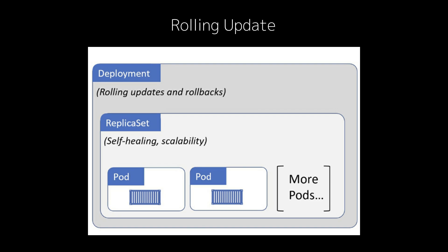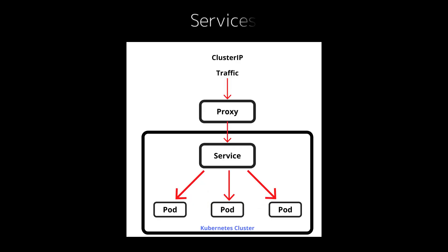Deployments also make scaling your application easier. If you need to handle more traffic, you can scale up by adding more pods, and Kubernetes will take care of distributing traffic and maintaining the desired number of replicas. Now let's talk about services — a service is an abstraction that defines a logical set of pods and a policy to access them.